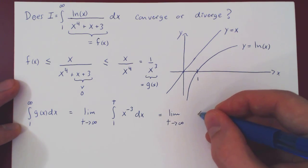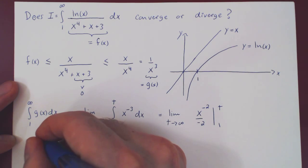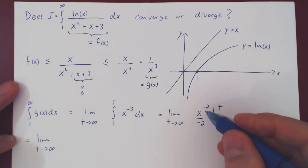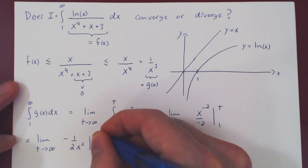Anti-derivative by the power rule, x to the negative 2 over negative 2, from 1 to t. Let's simplify first before we plug it in. So, if we send this down, we'll have negative 1 over 2 x squared.